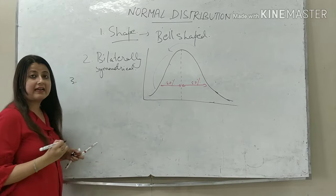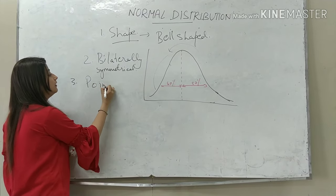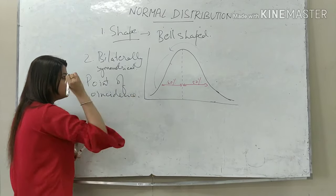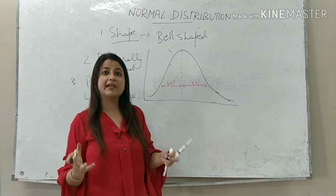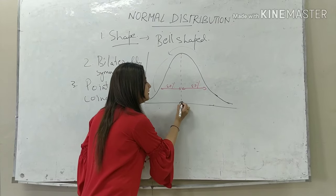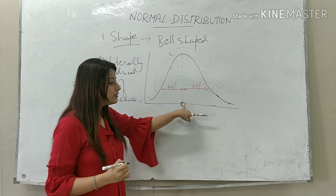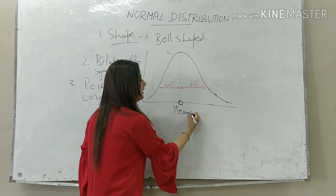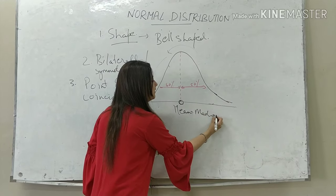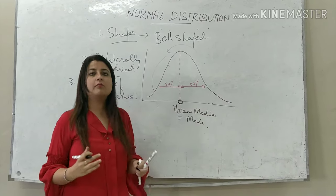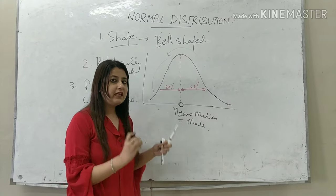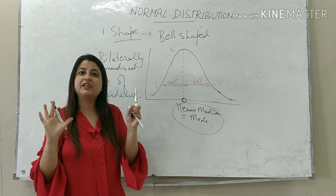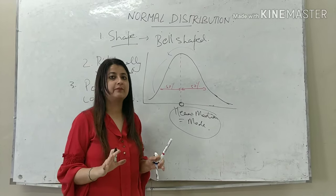The third feature is that there is a point of coincidence in a Normal Distribution. At that central point, mean is equal to median is equal to mode. So in a Normal Distribution, all three — mean, median, and mode — coincide. This is a key feature of Normal Distribution.